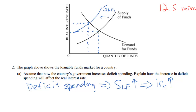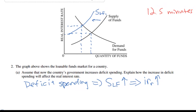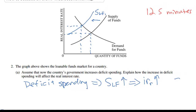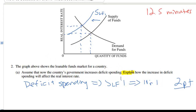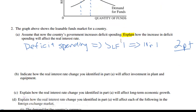Go back and watch the video on the crowding out effect from our website if you have not already seen it. The decrease in the supply of loanable funds causes the interest rate to increase — the little r stands for the real interest rate. This is probably a two-point question because it asks for an explanation. So the crowding out effect once again appears on our exam.